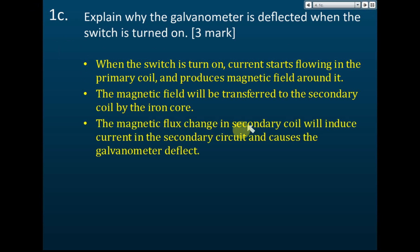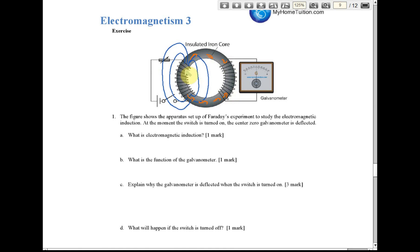The changing magnetic flux in the secondary coil induces current in the secondary circuit and causes the galvanometer to deflect. When the switch is turned on, current increases from zero to a certain value — say, zero to one ampere — so the magnetic field also increases from zero to a strong value, and this changing flux is cut by the secondary coil, inducing current.